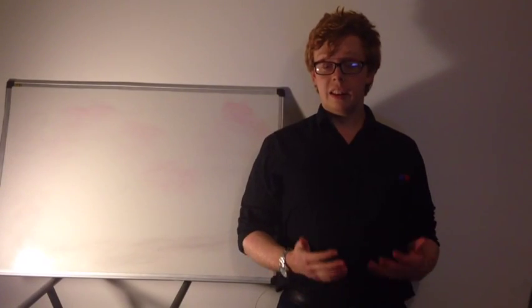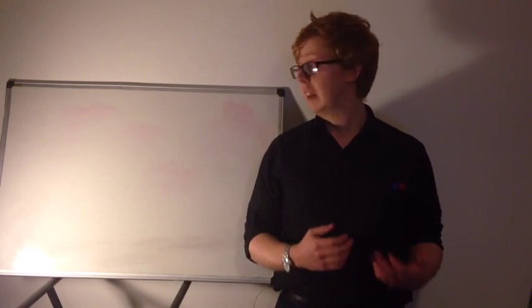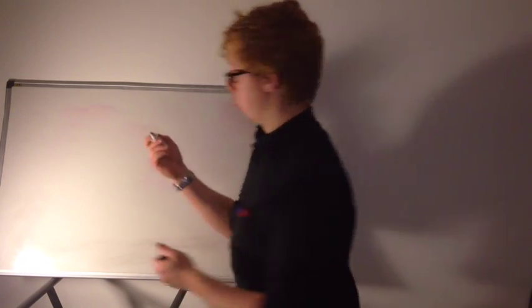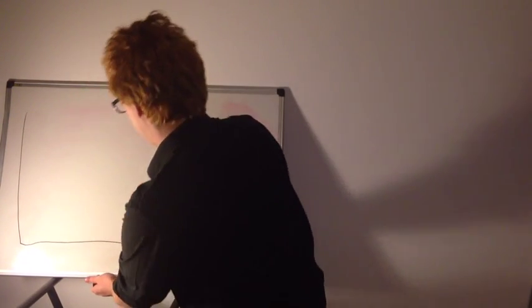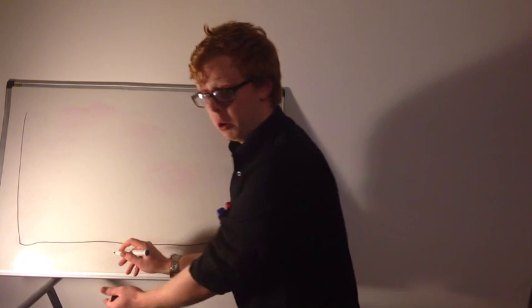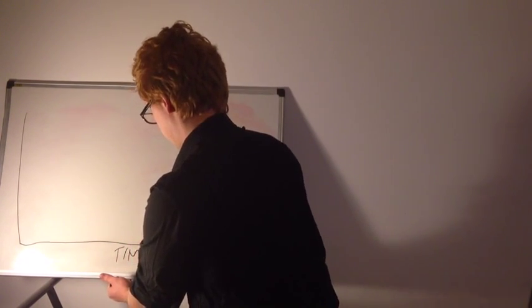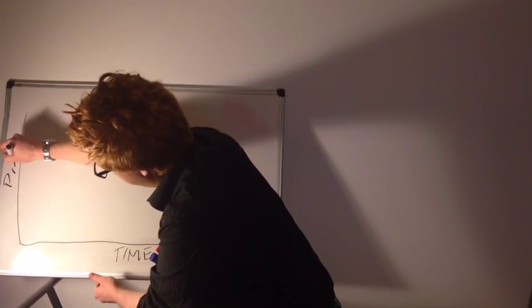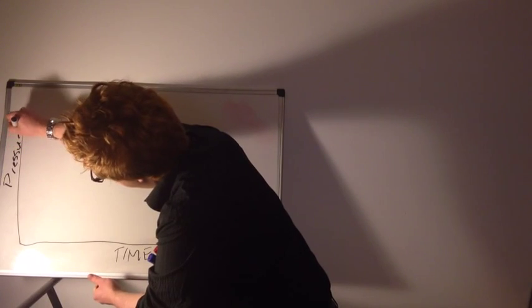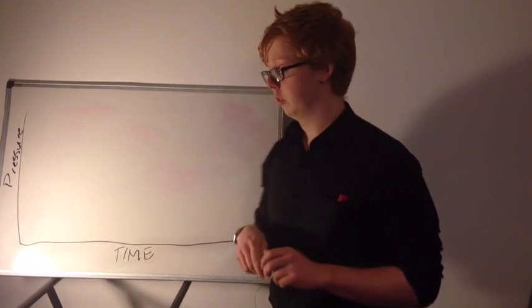So next, let's look at drawing the JVP waveform itself. Now first, we just label up the axes. So, we're going to draw our y-axis and our x-axis. And across the bottom, we're going to put time. And on the y-axis, we're going to put pressure. Now, as we said, the JVP has a characteristic double waveform, which is going to be represented in this.